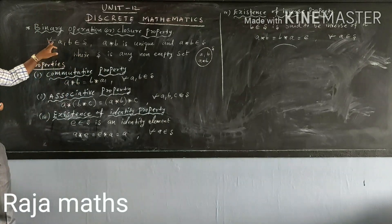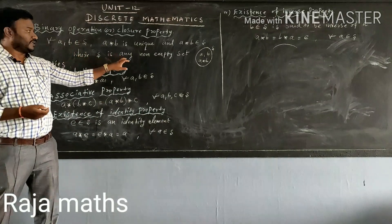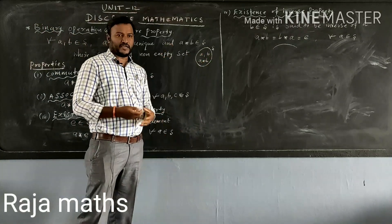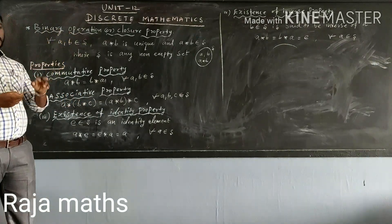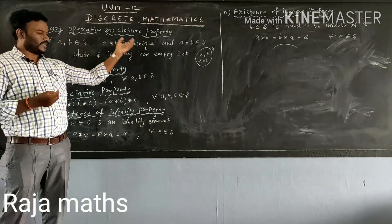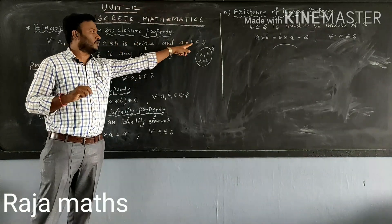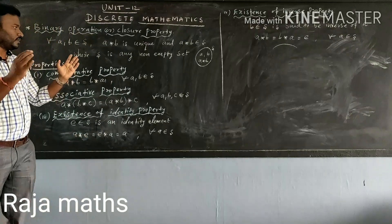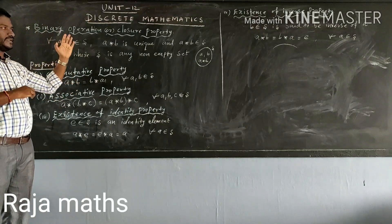For every a, b belonging to S, where S is any non-empty set, if a, b belongs to S, there is a unique element. If a, b belongs to S, this is a binary operation.